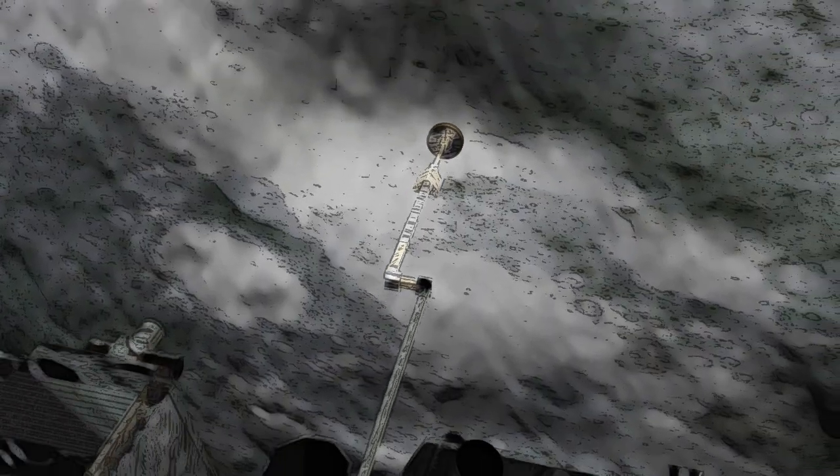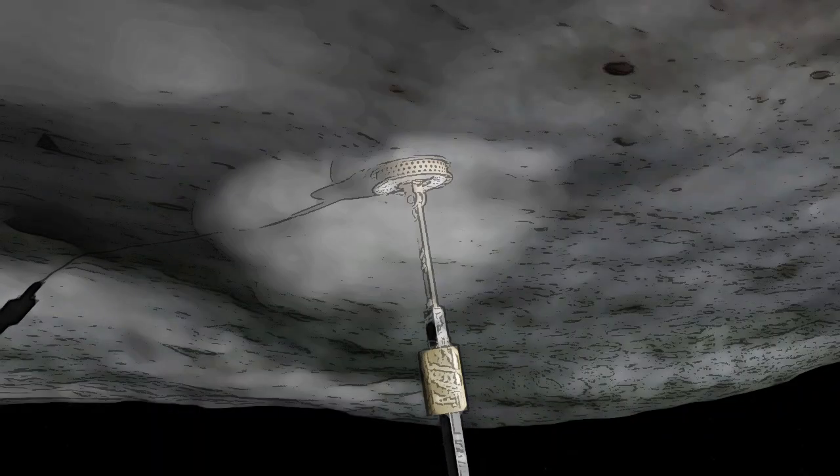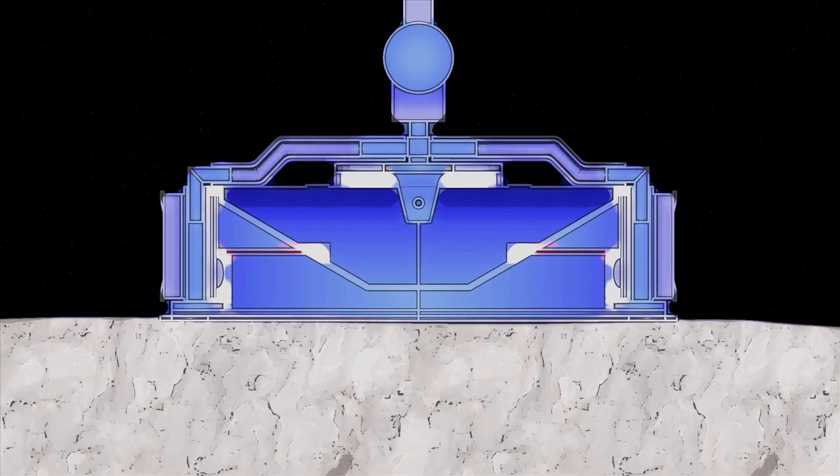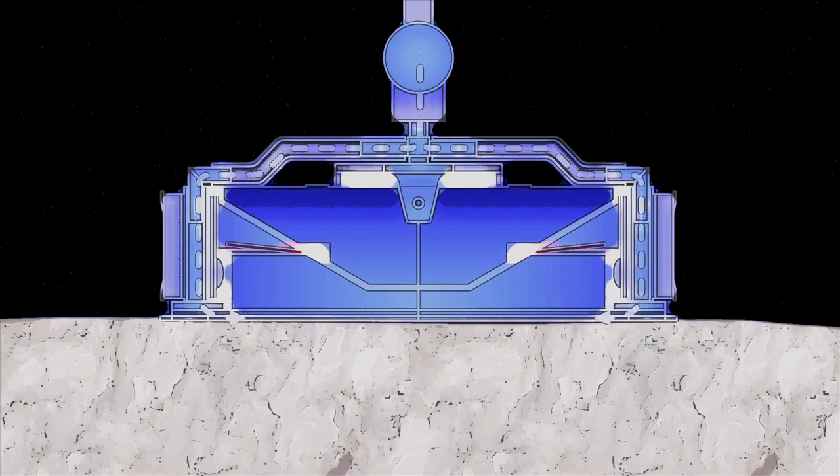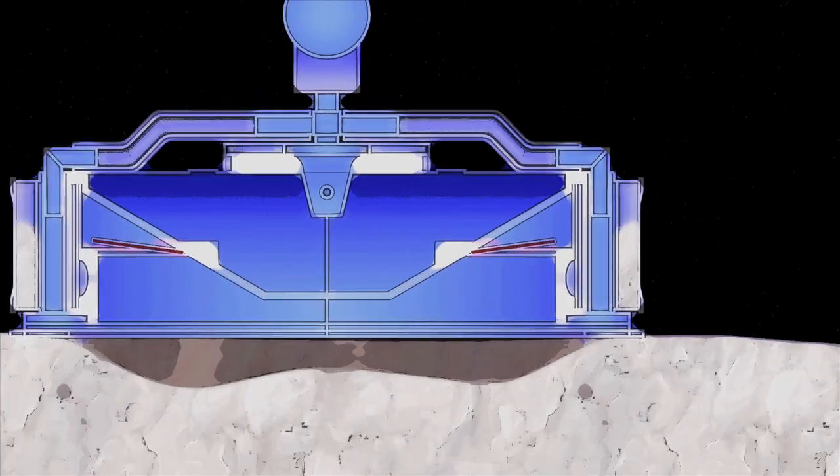When TAGSAM touches the surface of Bennu, it will release a burst of nitrogen gas, causing loose rocks and soil to be stirred up and directed into a collector on the sampler head. The entire process will take about five seconds.